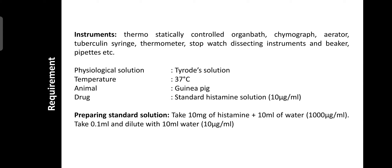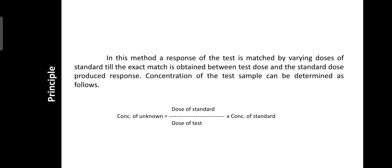The animal used is a guinea pig. The standard histamine solution is 10 micrograms per ml. It is prepared by dissolving 10 mg of histamine in 10 ml of water to give 1000 micrograms per ml, then taking 0.1 ml and diluting with 10 ml of water to give a final concentration of 10 micrograms per ml, used as the standard stock solution.